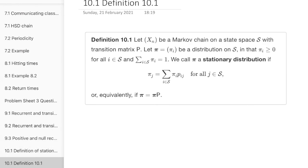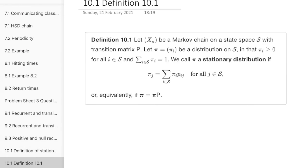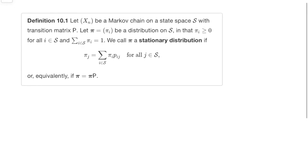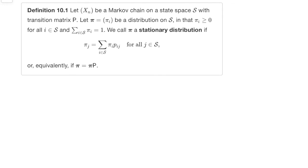Okay, so we can state that as a formal definition now, and here is that definition. Let Xn be a Markov chain on the state space with transition matrix p. Pi is a distribution, which means that it's bigger than zero and has it to one, and it's called a stationary distribution, if it satisfies that equation there, which is the one we just stated, or, in matrix vector multiplication form, it's just pi equals pi p. And that's the definition of a stationary distribution.